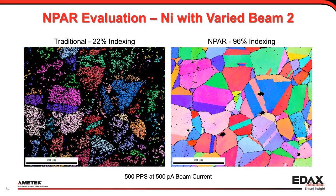Another example: by changing the beam parameters, we now go to 500 patterns per second at only 500 picoamps of beam current, which is still pretty low. Traditional methods show not really much there — your eye picks up some colored regions for the grains but it's really not too good, at only 22% indexing. However, by applying NPAR on the diffraction patterns you collect, you get 96% indexing — very high quality. You obviously have some noise within the grain even after processing, but now you have data you can quantitatively measure for proper interpretation.